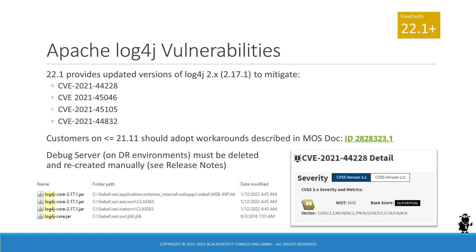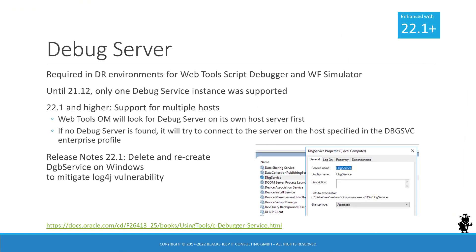On another note, the debug server on development environments needs to be deleted and recreated manually on Windows environments to fully mitigate the Log4j vulnerability. Speaking of the debug server, let's check out the changes for this helpful little service that's present on development environments since 20.11, back when the WebTools script debugger was introduced.